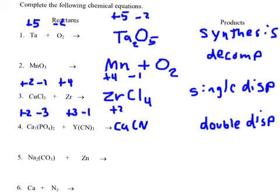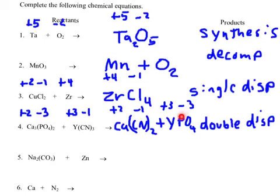Ytterbium, which is plus 3, is going to combine with phosphate, which is negative 3. Since this one is plus 3 and this is minus 3, we could swap 3 to 3 and then simplify — which is a one-to-one ratio.